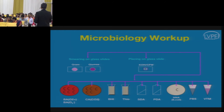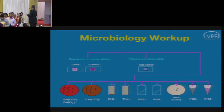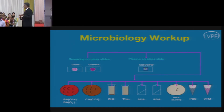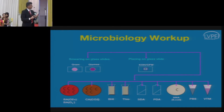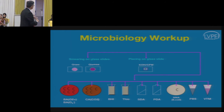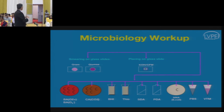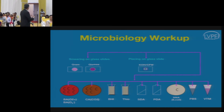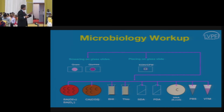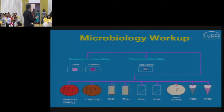Culture media and slides used: one slide each for Gram stain, KOH, and Giemsa for cellular morphology. For bacterial growth: blood agar and chocolate agar. For fungal growth: Sabouraud dextrose and potato dextrose agar. For suspected acanthamoeba: non-nutrient agar overlaid with E. coli. Liquid media may be used when the patient is already on antibiotics, to dilute the antibiotic load in the specimen.